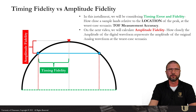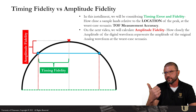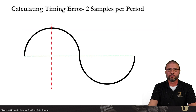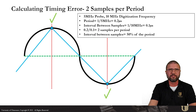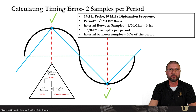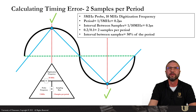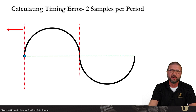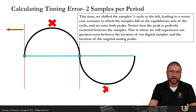Worst case scenario for accuracy always occurs when a peak is centered between two consecutive samples. For the first scenario, I'm considering a 5 megahertz probe and a 10 megahertz digitization frequency, which would result in two samples per period spaced equally down the length of the cycle — we can also call this the Nyquist sampling limit. Best case scenario, we get a sample on both the positive and negative peaks, meaning amplitude and timing fidelity would have been preserved. The problem with Nyquist is those samples could occur anywhere and there's no guarantee we're going to find the peak.